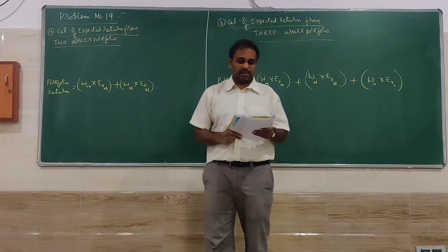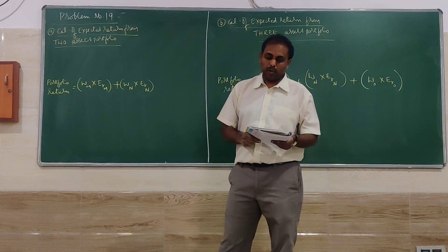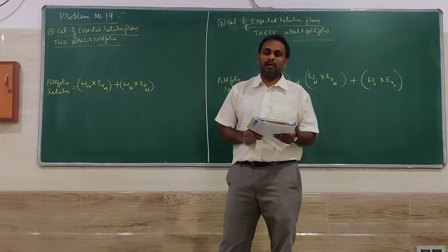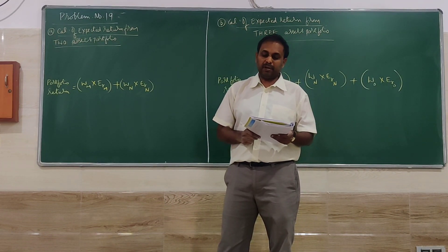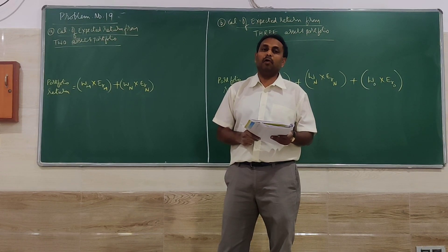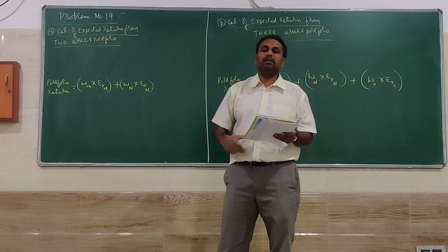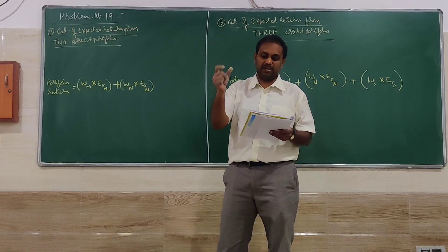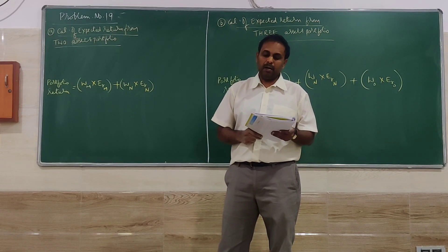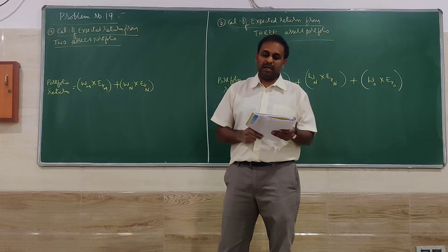Problem 19 goes like this: The stock of M company has the expected rate of return of 20% for a holding period. The N company has 16% expected return.